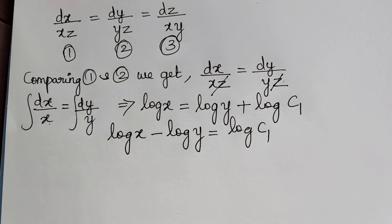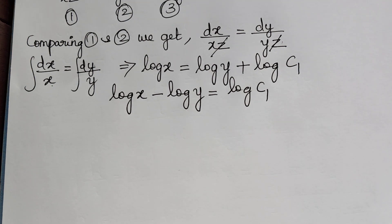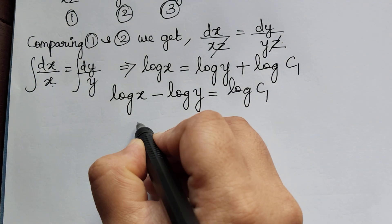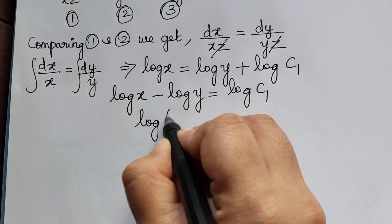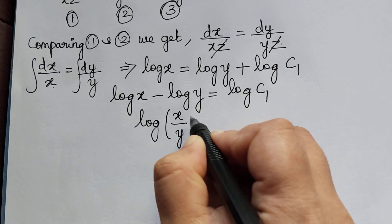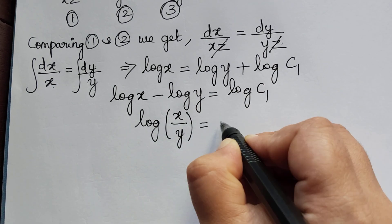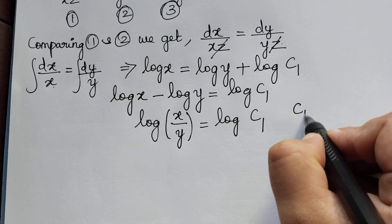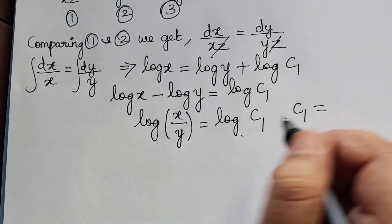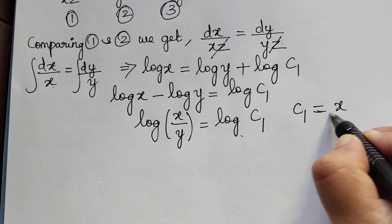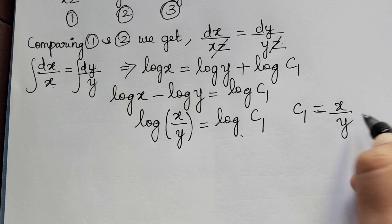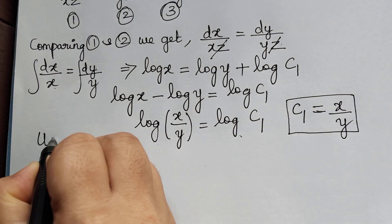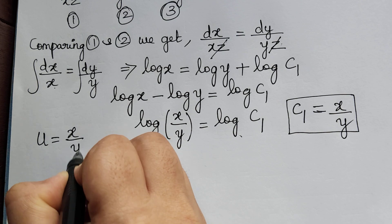Using the logarithm rule, log a minus log b can be written as log(a/b). So this becomes log(x/y) equal to log c1. Therefore c1 equals x by y, which gives us the first solution u. So u is equal to x by y.